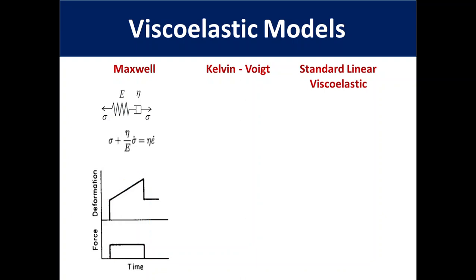Second model is Kelvin-Voigt model. In this model, spring and dashpot is connected in parallel. This model can also be represented by very simple equation as shown in the slide.